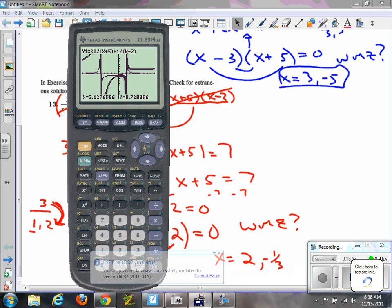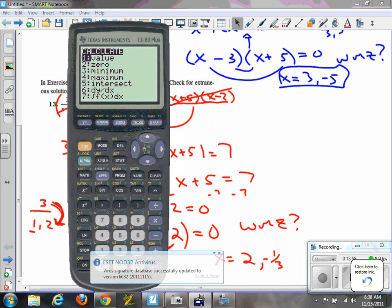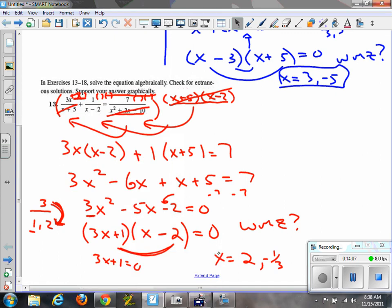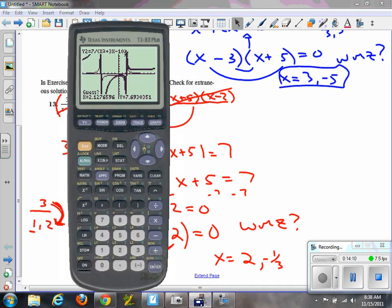Those are definitely places where x is equal to 2 and negative 1 third. We can also verify it with the second trace button, we can do intersections. First curve, second curve, usually I'm just enter, enter, enter, so this time I will do that. Enter, enter, enter. Let's see which one it picks up. x equals negative 0.33333, so I'm verifying it. Hopefully that helps.